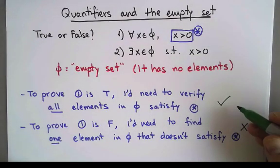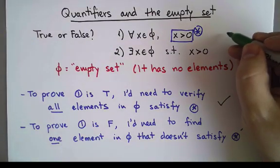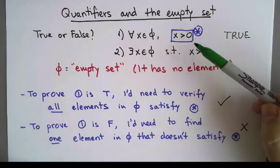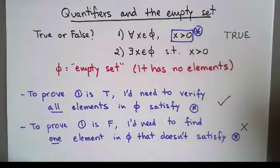So this is good. If I were able to do both, that could mean that I got a contradiction, and that's not good. It means this is true. I am able to verify that all zero elements of the empty set satisfy that. I am not able to find a single element that doesn't satisfy it.